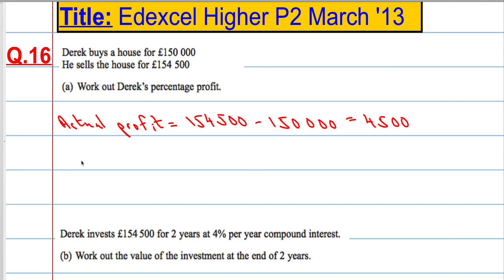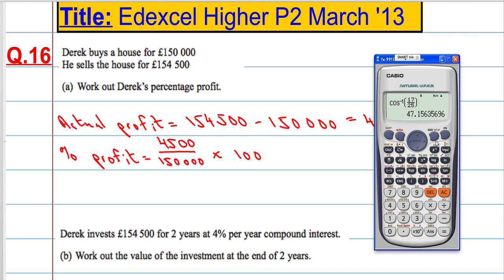So he's made £4,500. What percentage of the original price was that? The percentage profit will equal the actual profit over the original amount multiplied by 100. That's the profit as a fraction, and then multiplying it by 100 will give it as a percentage. So let's just see it in action here.